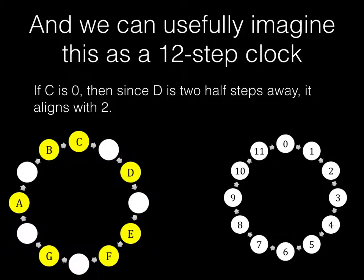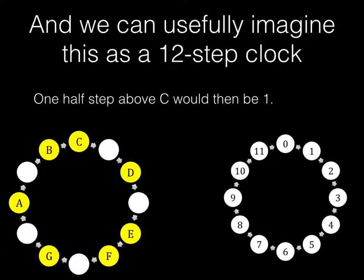Then if C is 0, that means that D is going to be two half steps away, and so it's going to align with 2. And one half step above C is therefore going to be 1.